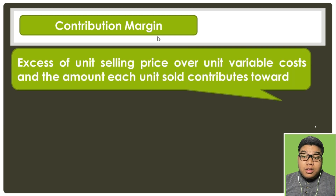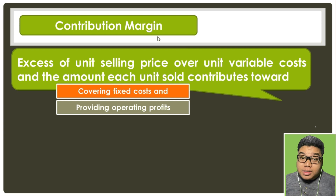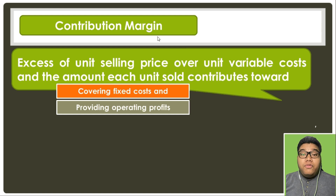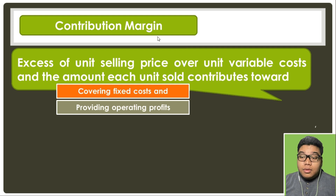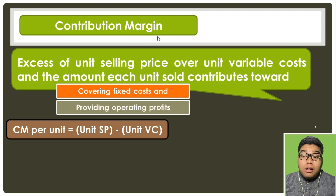Contribution margin is the excess of unit selling price over unit variable cost, and the amount each unit sold contributes toward initially covering fixed costs and subsequently providing operating profits. Contribution margin will initially help in covering the fixed costs incurred, and subsequently when all fixed costs are covered, we will be able to realize profits. That is the only point when we get to realize profits.